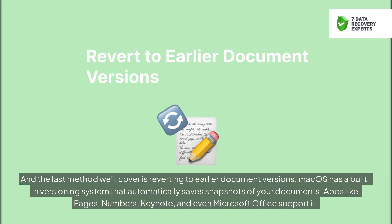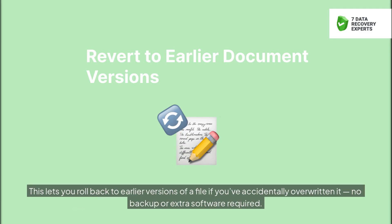The last method we'll cover is reverting to earlier document versions. macOS has a built-in versioning system that automatically saves snapshots of your documents. Apps like Pages, Numbers, Keynote, and even Microsoft Office support it. This lets you roll back to earlier versions of a file if you've accidentally overwritten it — no backup or extra software required.